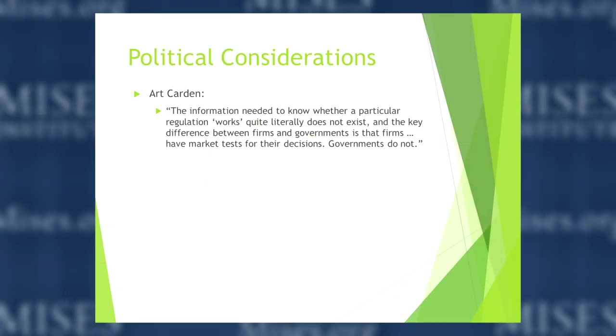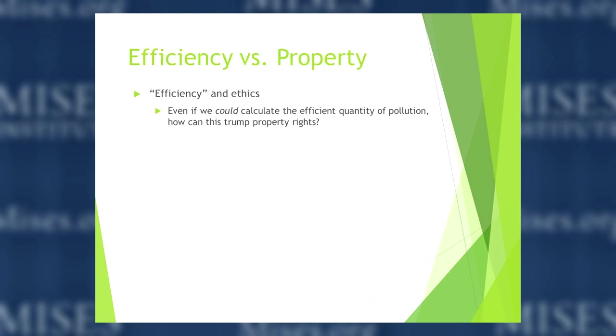There are also political considerations. Art Carden says the information needed to know whether a particular regulation works quite literally does not exist. The key difference between firms and governments is that firms have market tests for their decisions — governments do not. We're without the information we'd need to make these decisions. This is back to Mises' socialist calculation problem — the exact same problem applied to an environmental issue.